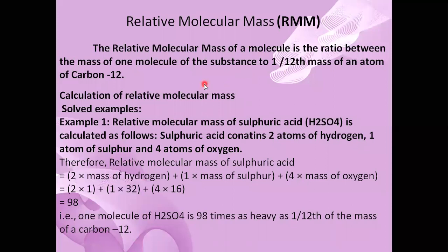For example, how to calculate the relative molecular mass of sulfuric acid, H2SO4. Sulfuric acid contains 2 atoms of hydrogen, 1 atom of sulfur, and 4 atoms of oxygen. So the relative molecular mass of sulfuric acid is calculated as follows.